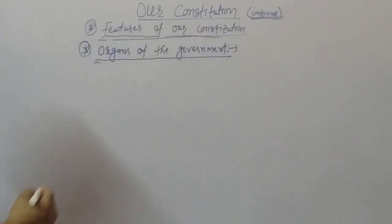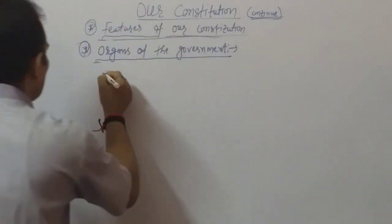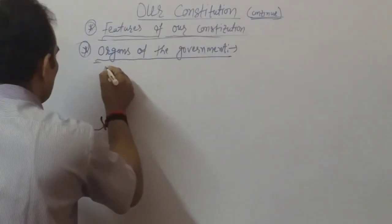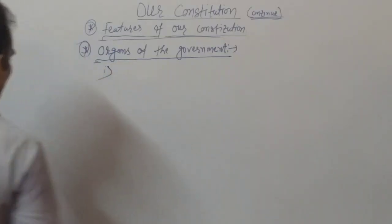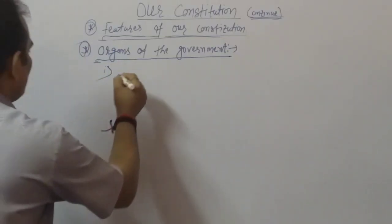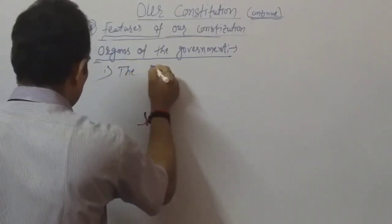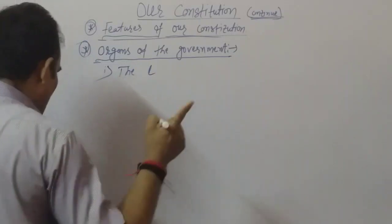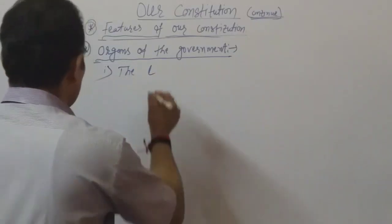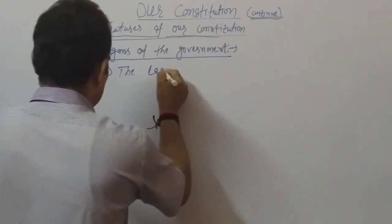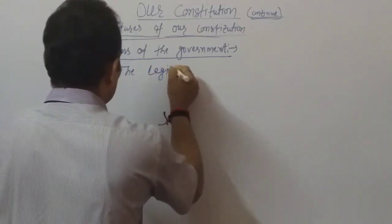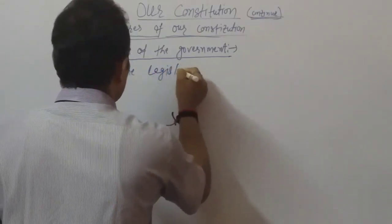The three main branches are: first, the legislative branch; second, the executive branch; and third, the judicial branch.